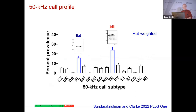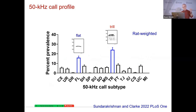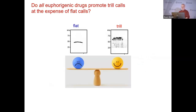Here's what we call the call profile — the percentage prevalence of each of 14 different subtypes of 50 kHz calls. We've been fairly fixated on trills and flats, almost always the most predominant subtypes. The hypothesis became: are trill calls, or perhaps trill calls relative to flat calls, telling us about positive affect? So far I've only told you about amphetamine and pair testing. How far can we stretch this? How generalizable is it?